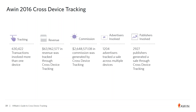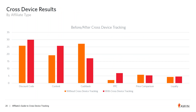That's a lot of commission that would have gone unclaimed if cross-device tracking had not been put in place. That's why this is so huge for affiliates to know and understand. Cross-device tracking is critical, or you could be losing out on an awful lot of money. Our tracking in 2016 involved 1,204 advertisers and 2,927 publishers who all generated a sale as a result of cross-device tracking. We've got a wide variety of results depending on your affiliate type.